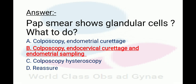Now coming to the exam question which was asked before: pap smear shows glandular cells, what to do? The options were: colposcopy and endometrial curettage; colposcopy, endocervical curettage, and endometrial biopsy; colposcopy and hysteroscopy; and reassure. Among all these options, option B seems to be the most correct one because it covers all the areas. So the answer to this question is B.